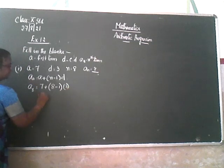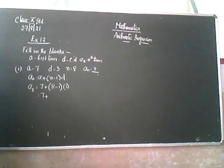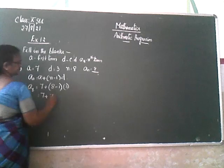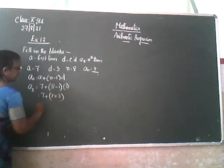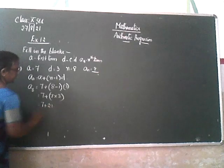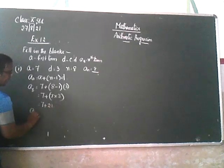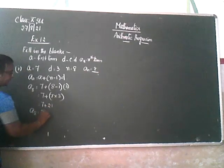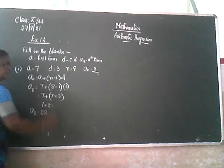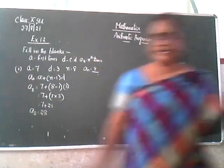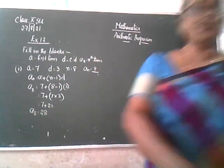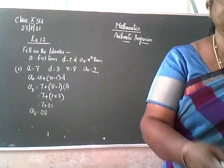So 7 plus what is 8 minus 1? That is 7, into 3. So 7 plus 7 threes are 21. So A8 is 28. 21 plus 7 is 28. Understood? Next.